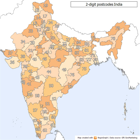There are nine PIN zones in India, including eight regional zones and one functional zone. The first digit of the PIN code indicates the region, the second digit indicates the sub-region, and the third digit indicates the sorting district within the region. The final three digits are assigned to individual post offices.